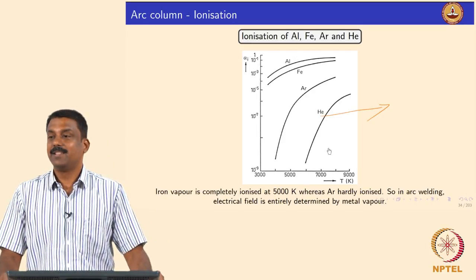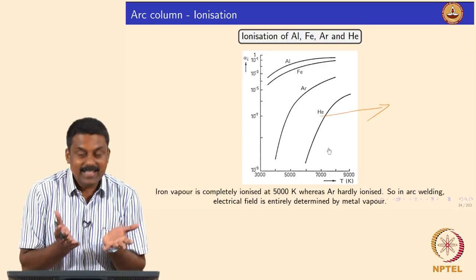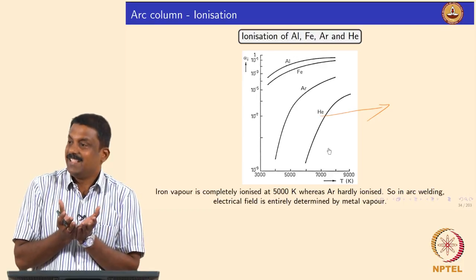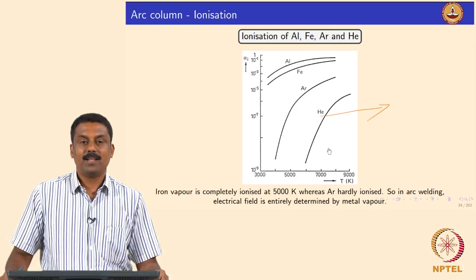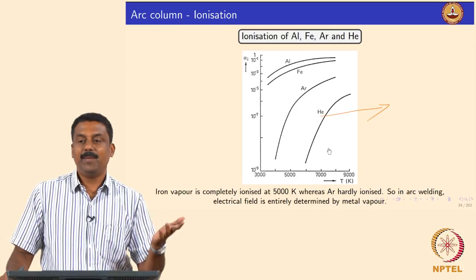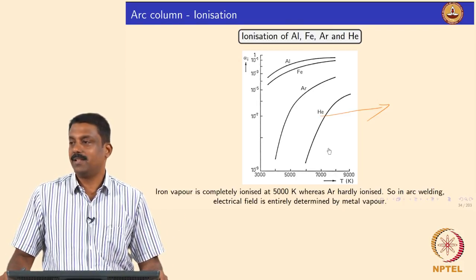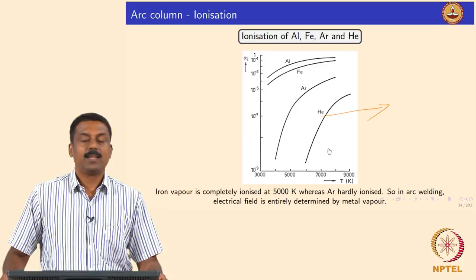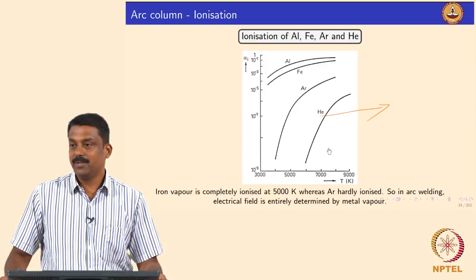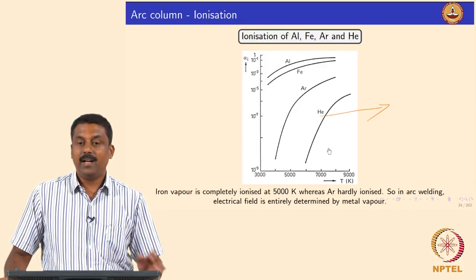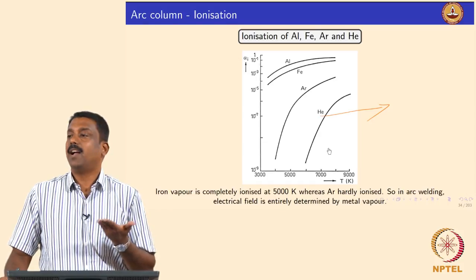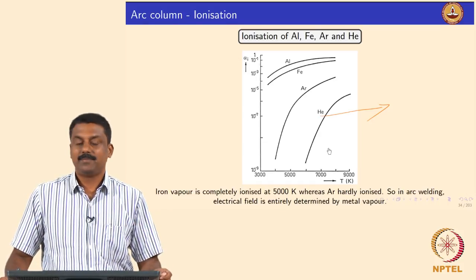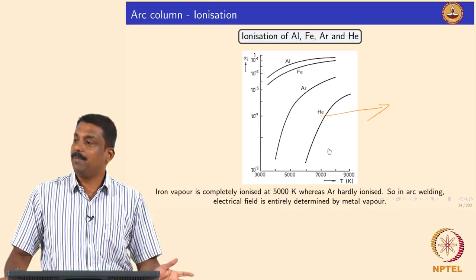So the moment you strike an arc, you also start melting the anode. If you keep your tungsten electrode as a cathode, you will start melting the anode. And if the anode is superheated, the molten anode would also vaporize — then you form metal vapors.